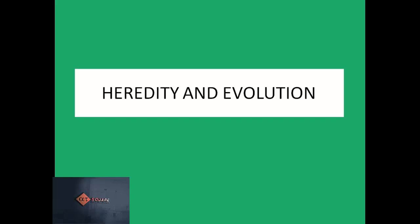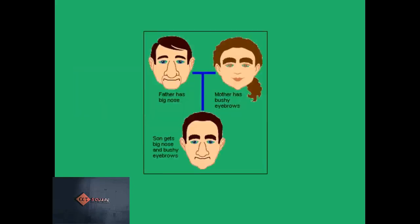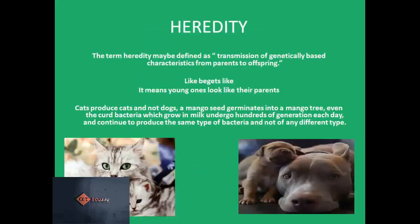But first, to understand any of this, we need to discuss the term heredity. We have all been told at some point that we have our mother's eyes or our father's nose. Generally when we meet people we compare their features with those of their parents — she looks like her mother, or his eyes are like those of his father. Why this resemblance? Because every one of us receives traits or distinctive features from one's parent in the form of genes. This is heredity — it is simply the transmission of genetically based characteristics from parents to offspring.